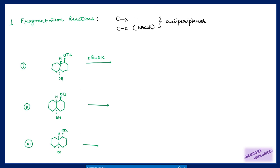We have taken examples from the Clayden book summary. First we have to draw this decaline structure into chair form and find out which type of decaline it is. This is a trans decaline, so we can draw it like this. If the OH is at an axial position, then at the third position the tosylate group is trans to this OH. At the 1,3 position, trans groups will be axial-equatorial to each other. When we use this base, this bond will break, this H will be removed, this bond will break, and this tosylate will be removed — showing fragmentation of this carbon-carbon bond.